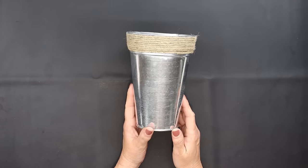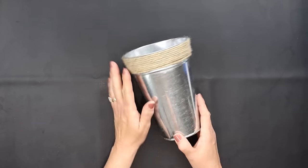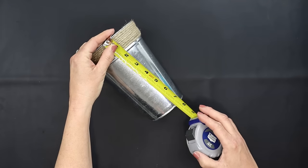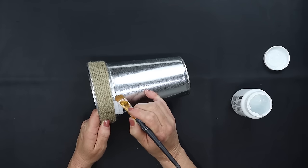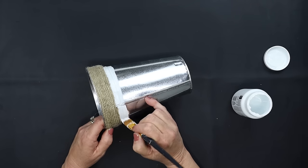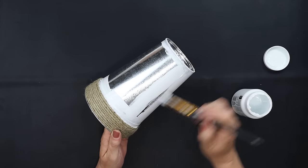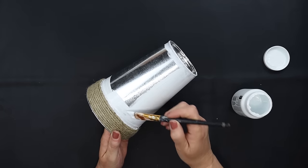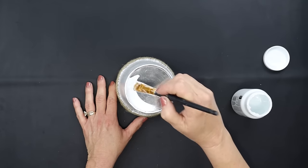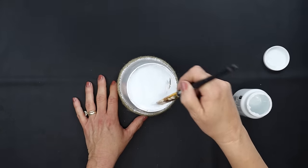Grab one of Dollar Tree's metal buckets with the rope on one end. This one measures about seven and a half inches tall. Carefully paint right above the rope with some white chalk paint and then paint the entire outside of the bucket including the very bottom. This will take two coats of white chalk paint and allow that to dry.